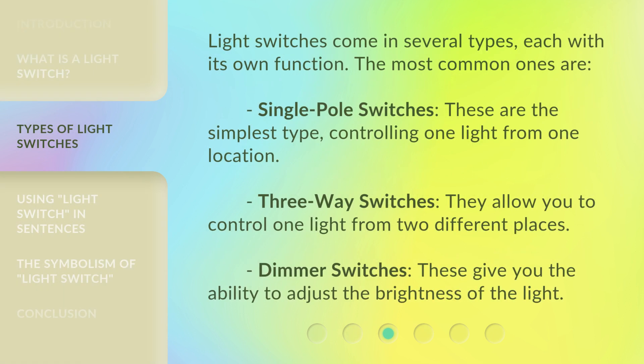Light switches come in several types, each with its own function. The most common ones are single-pole switches. These are the simplest type, controlling one light from one location.